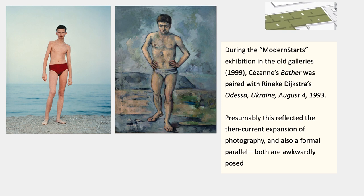There was also an exhibition in 1999 called Modern Starts, and for that exhibition they put the Cézanne Bather next to a photograph by Rineke Dijkstra called Odessa Ukraine, August 4, 1993. I assume this reflected the exponential expansion of photography into the fine art market. It also made a nice formal parallel because both are kind of awkwardly posed figures — in Dijkstra's case, deliberately so, as part of the meaning of the works. In Cézanne's case, the awkwardness is in relation to academic practices of his time, which is one of the salient characteristics of his practice that led on to cubism. But that was just a temporary exhibition.